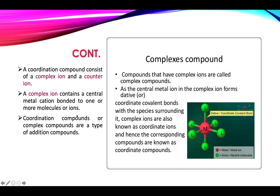A coordination compound consists of a complex ion and a counter ion. Coordination compounds have two parts: complex ion and counter ion. The complex ion contains a central metal cation bonded to one or more molecules or ions. The central metal atom is a transition element, with electron pair donors surrounding it. Complex compounds that have complex ions are called complex compounds, as the central metal ion in the complex ion forms dative or coordinate covalent bonds with the species surrounding it. Complex ions are also known as coordinate ions, and hence the corresponding compounds are known as coordinate compounds.